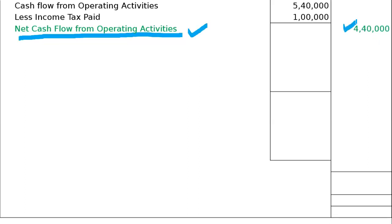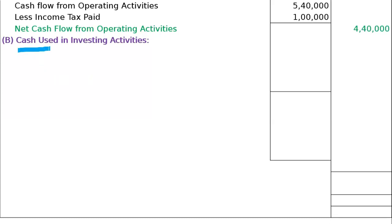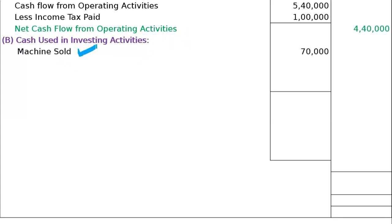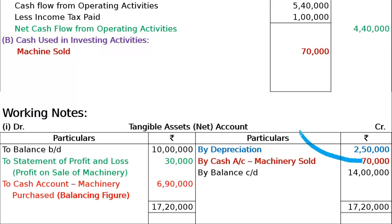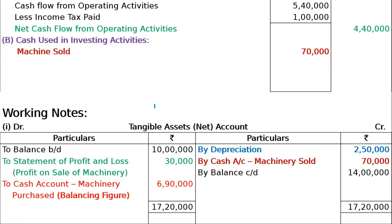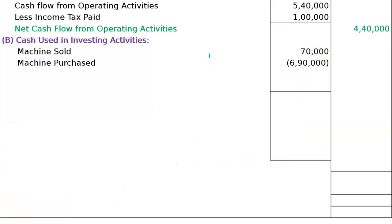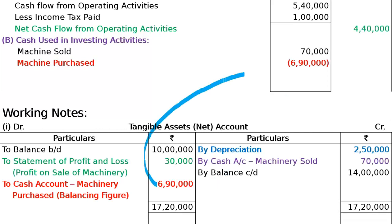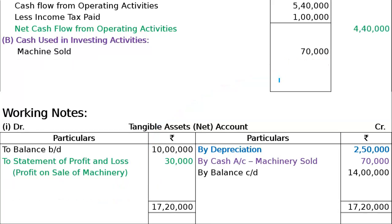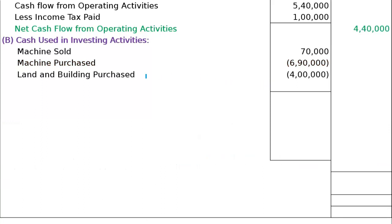Net cash flow from operating activities 4,40,000. Then cash used in investing activities: you record the assets. Machinery sold 70,000 will come here. Machinery purchased 6,90,000 balance.